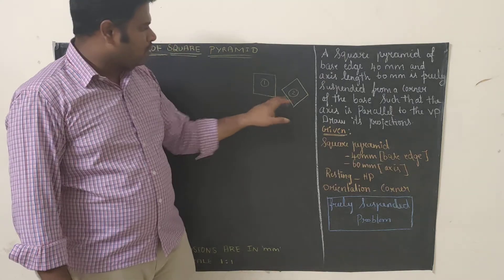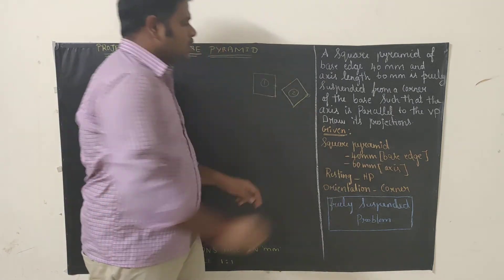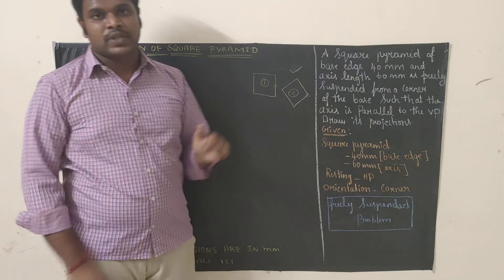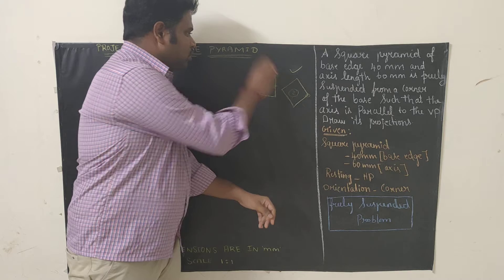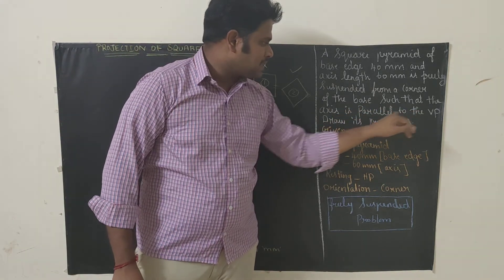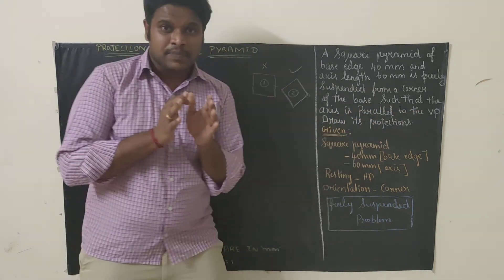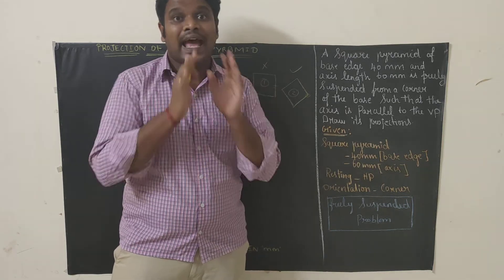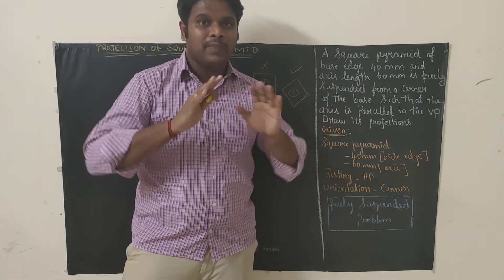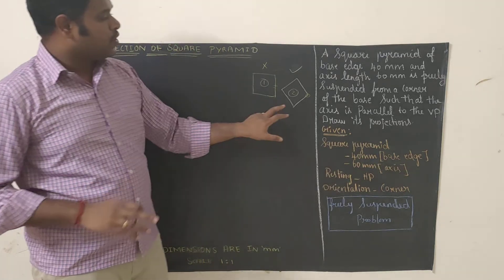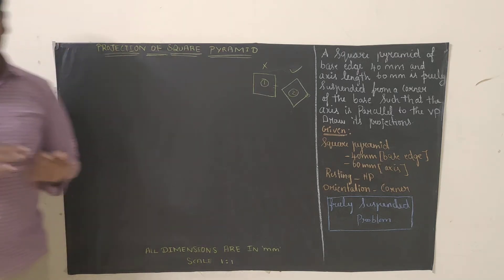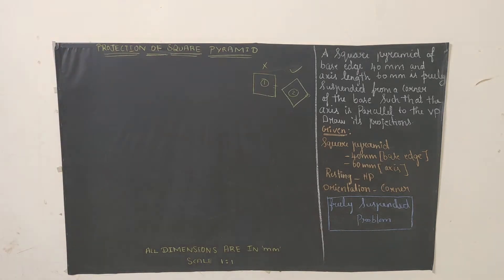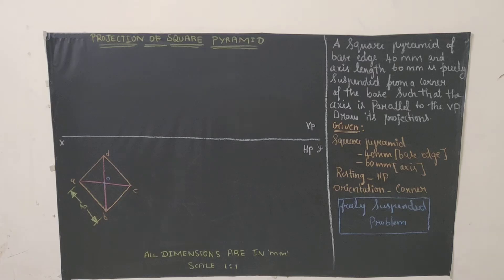Since the orientation is corner, we go with the second diagram — the square oriented at 45°. We have to draw this type of square, not the other one. The axis is parallel to VP, which means the axis is inclined to HP. Since the axis is inclined to HP, we draw the base diagram in HP. We'll draw the square in HP and then proceed. We've already solved two or three freely suspended problems, so this will be easy.